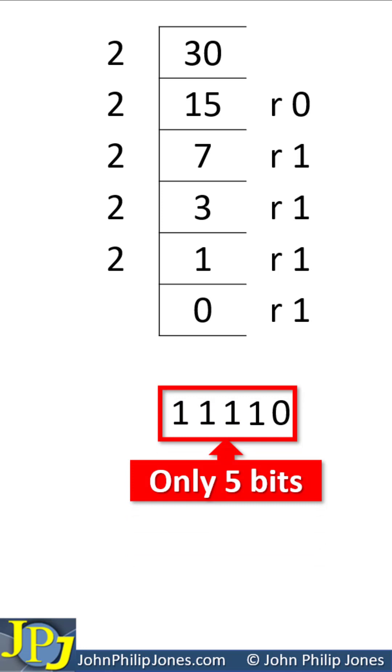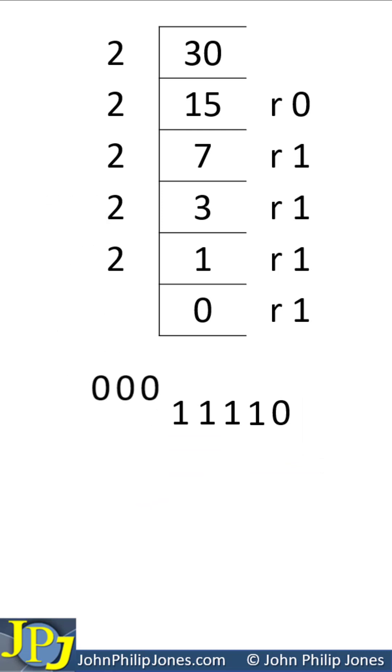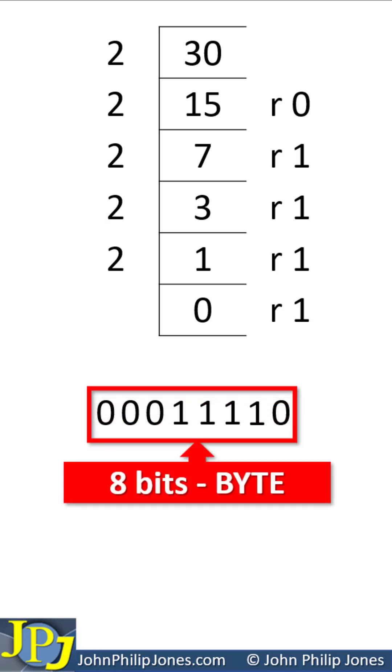And the question asks for us to represent 30 using a byte. So it means we now have to add 3 zeros in the most significant positions. And this makes up 8 bits which is clearly a byte. So the denary number 30 can be represented by a binary byte as you see here.